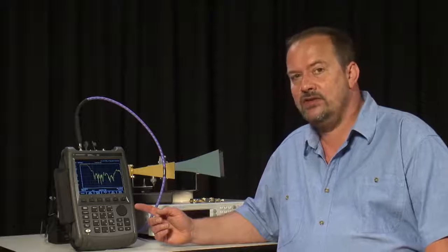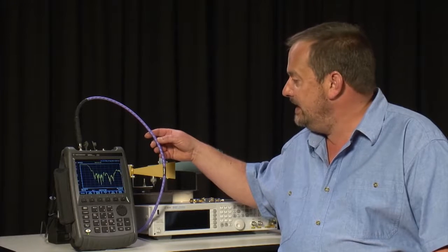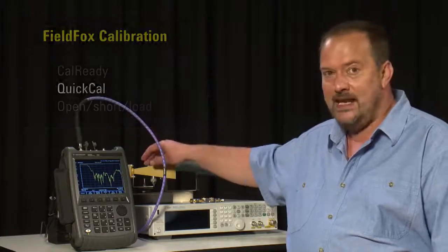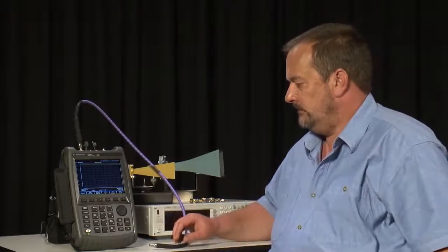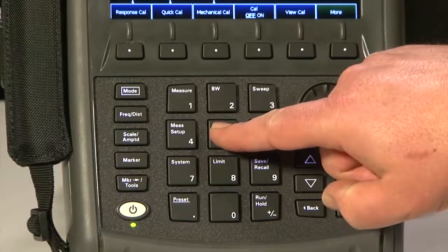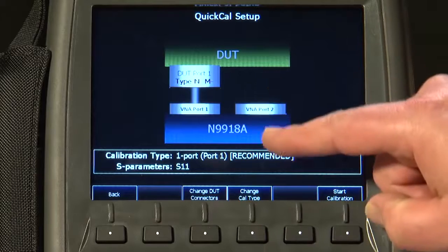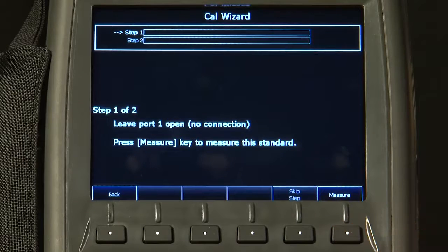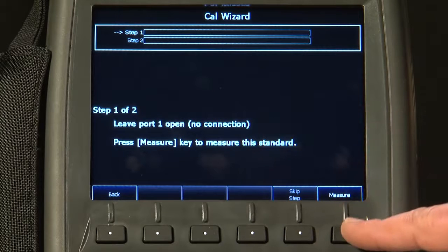However, if you do want to remove the effects of the test cable, or perhaps you have got a longer cable, then we will do a quick CAL. First, I will disconnect the cable and the diagram on the display shows how to connect it. Dark calibration, and it says here leave port 1 open, no connection. So I will press measure.